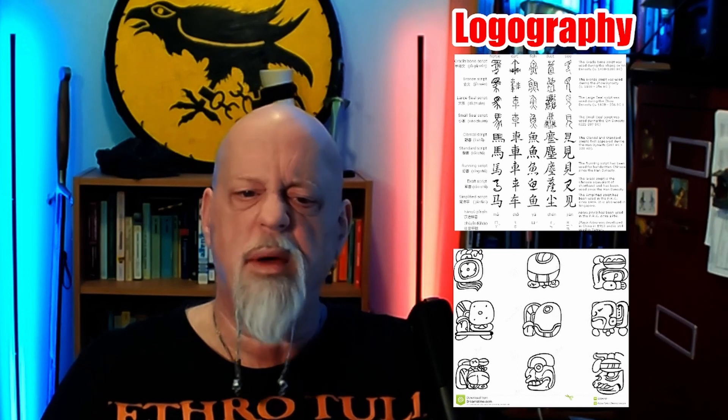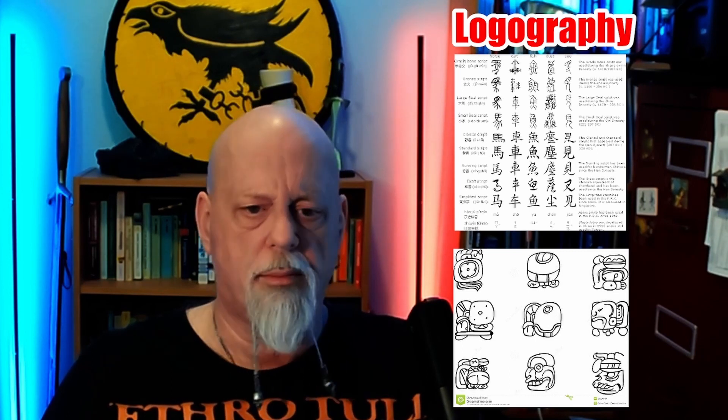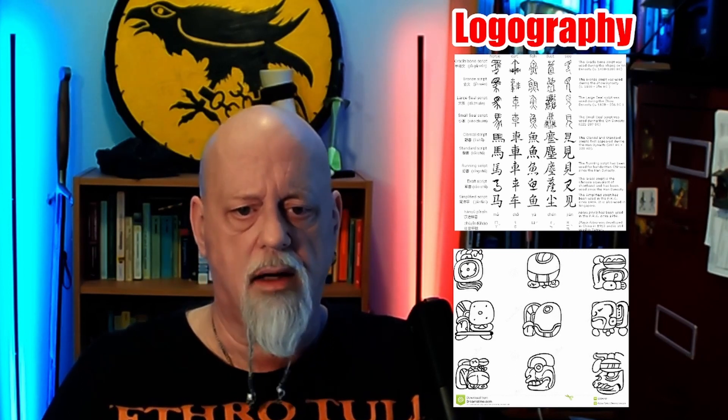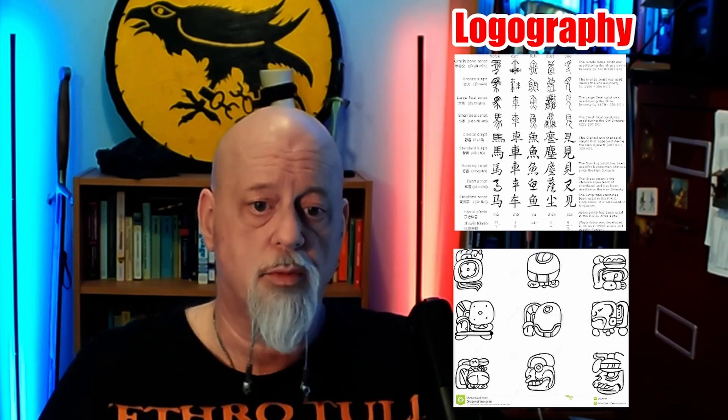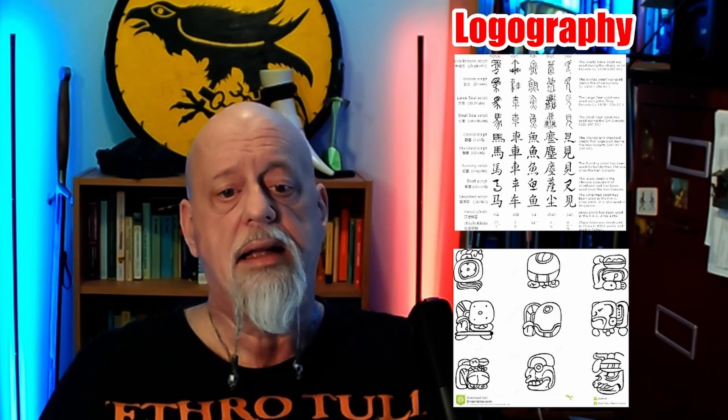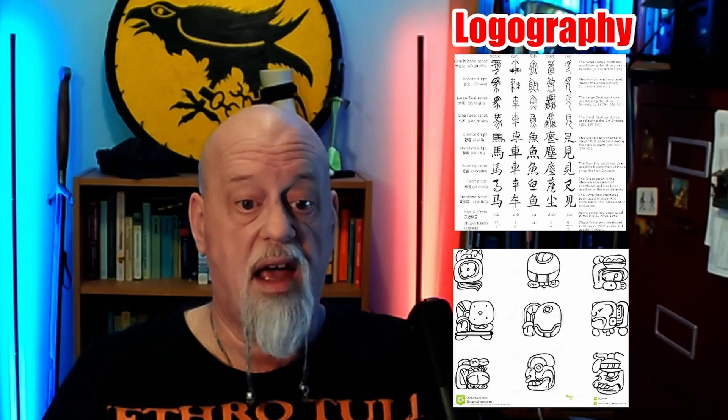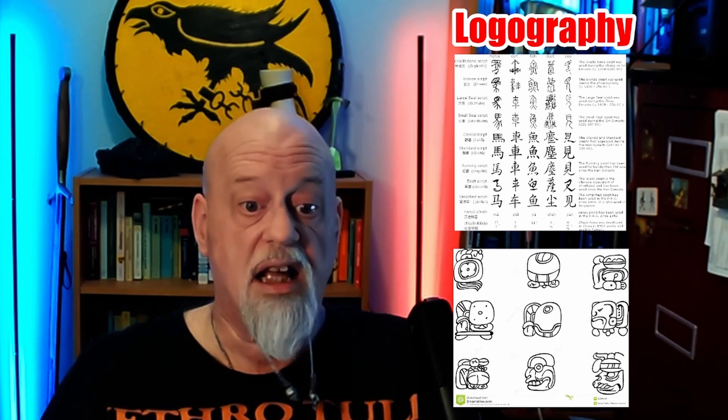There can be a huge number of signs in a logography. Chinese has thousands and thousands of them that the average reader is expected to recognize and be able to reproduce. The best examples are Chinese, Egyptian hieroglyphics, and Mayan glyphs.